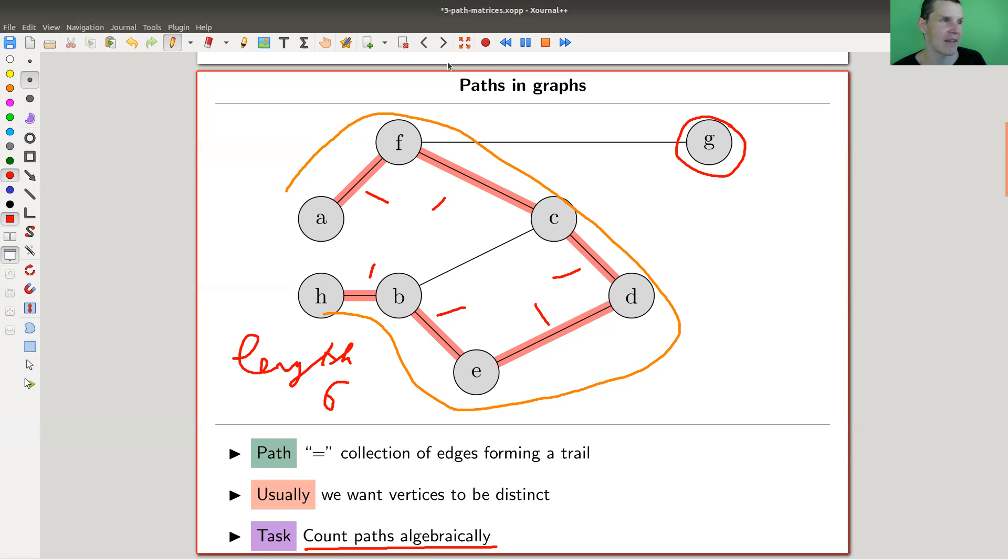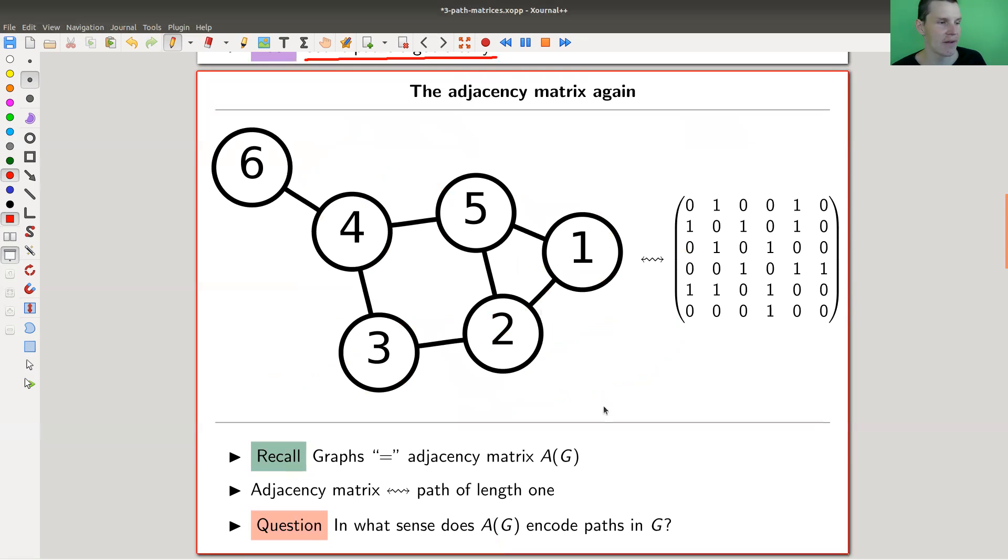We start with a nice little example. It really looks a little bit like a toy example, but we'll see in a second. Just a reminder, the adjacency matrix should somehow know the path. Remember the adjacency matrix - here vertex 1 is connected to 2 and 5, so I put the corresponding entries here. The adjacency matrix, let me just call it A instead of A(G), or the first power of A if you want, counts by definition paths of length one.